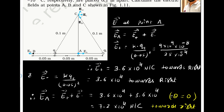Now we find the electric field at point B due to these two charges. The positive charge will produce an electric field towards the right side, whereas the negative charge will produce an electric field towards the left side — because the field due to a positive charge is away from the charge, and due to a negative charge is towards the charge. So the angle between the two field vectors at point B is 180°.